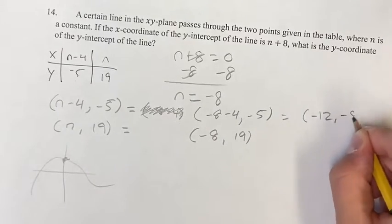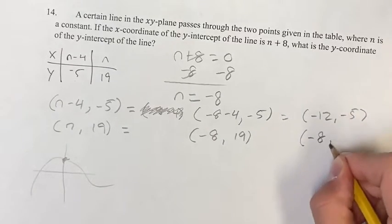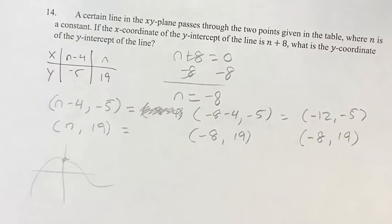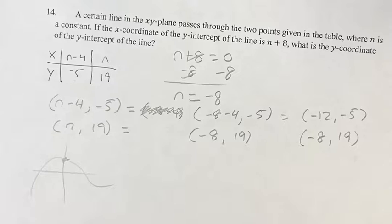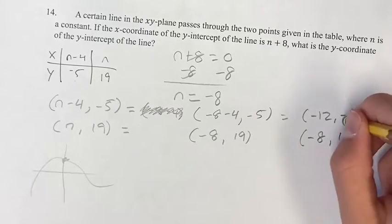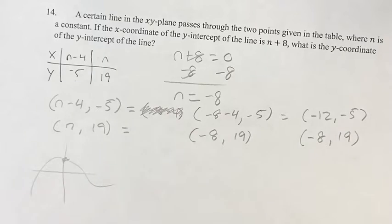This is (-12, -5). This is (-8, 19). We're asked, what is the y-coordinate of the y-intercept of the line? So again, whatever that value is, you have two points. You have the ability from these to get the equation of the line.